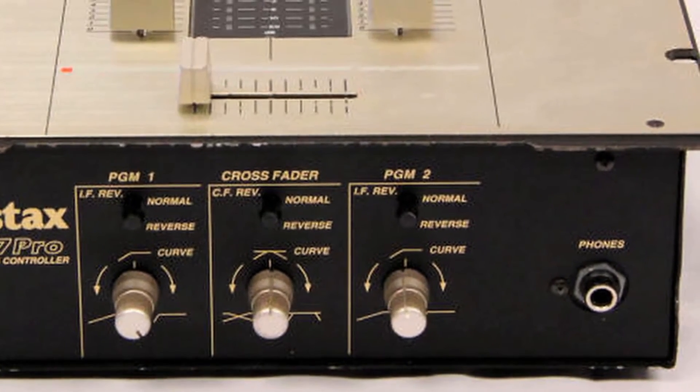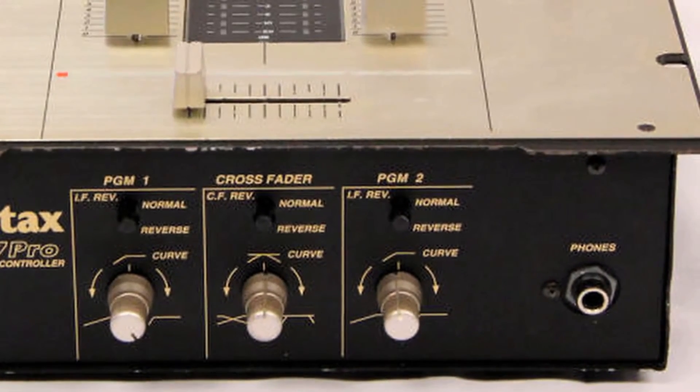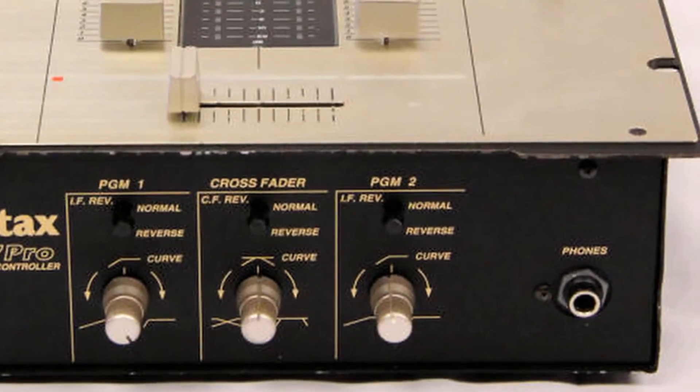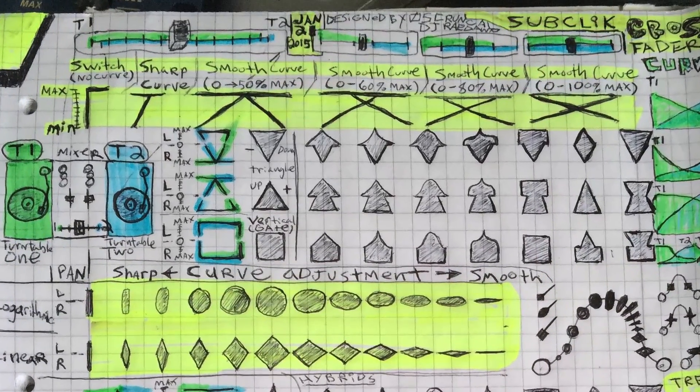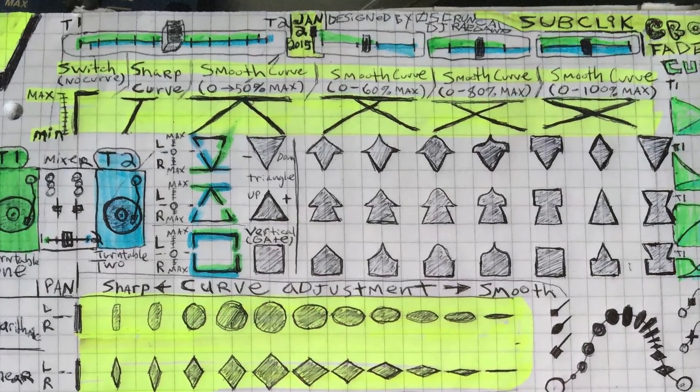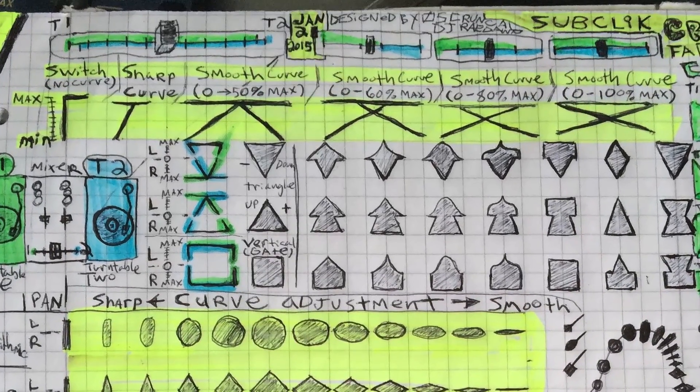What do the lines of the curve adjustment symbols on mixers mean? Modern turntablists use highly sophisticated cross faders that often use an adjacent style that depicts the overlap of the mix between two turntables.